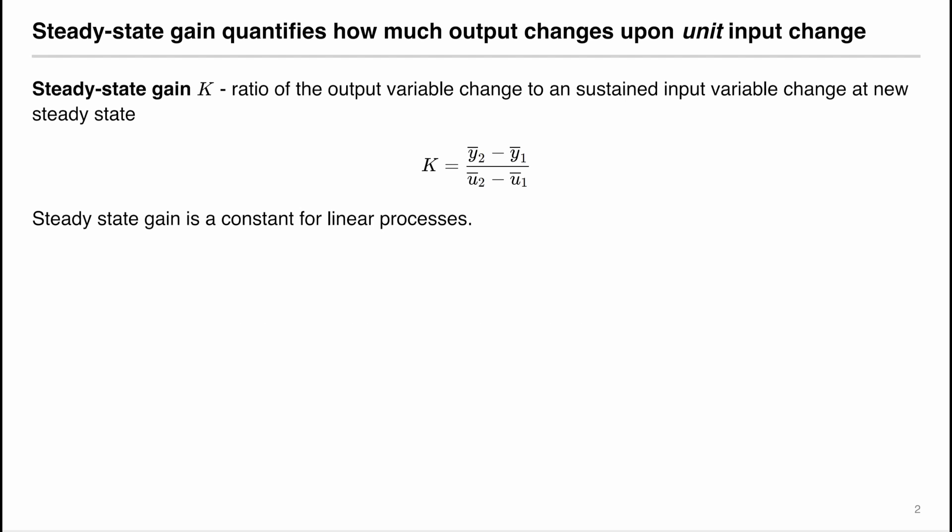The steady-state gain is defined as the ratio of the output variable change to a sustained input variable change, which is a step change. Therefore, it is sustained at a new steady-state. Mathematically, it is defined as K equals to steady-state change in output divided by the steady-state change in the input.